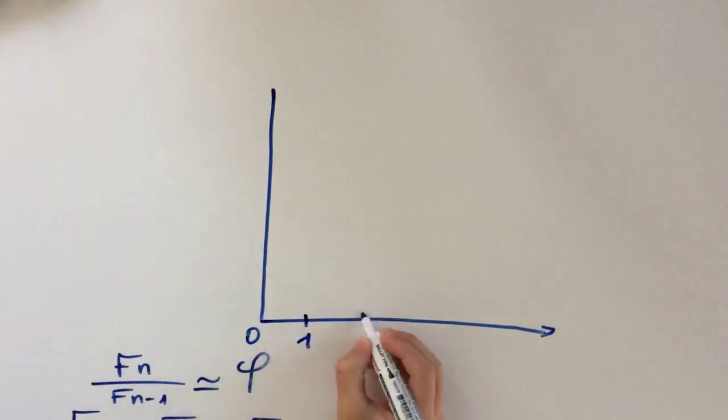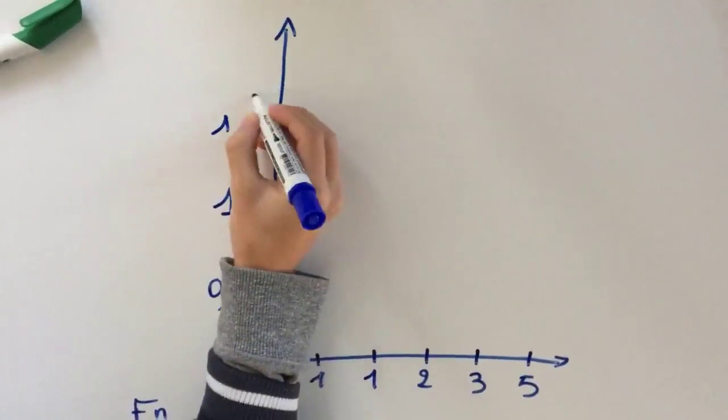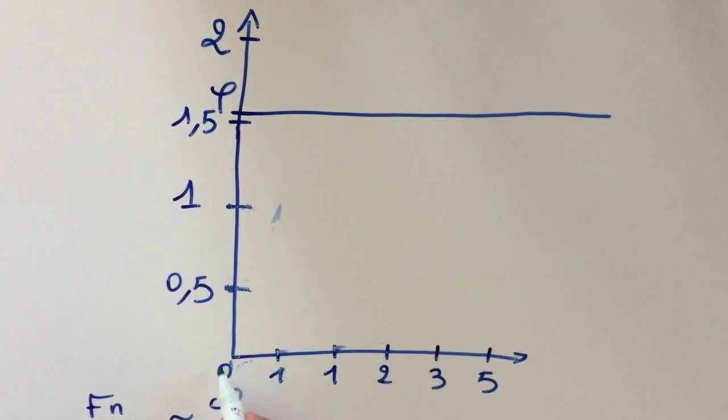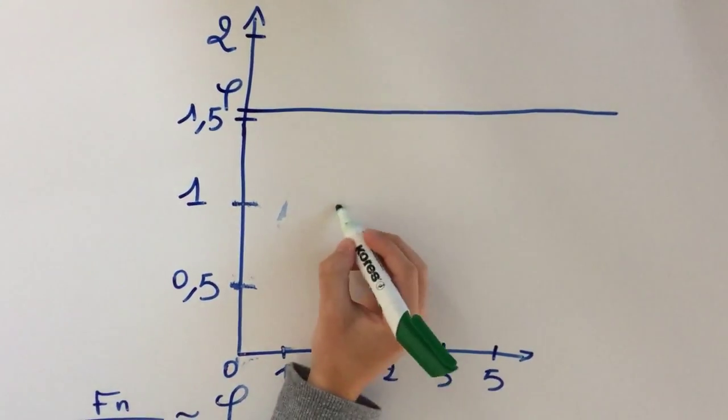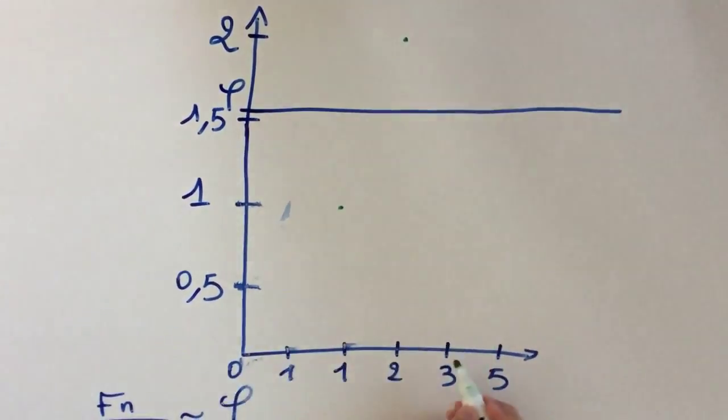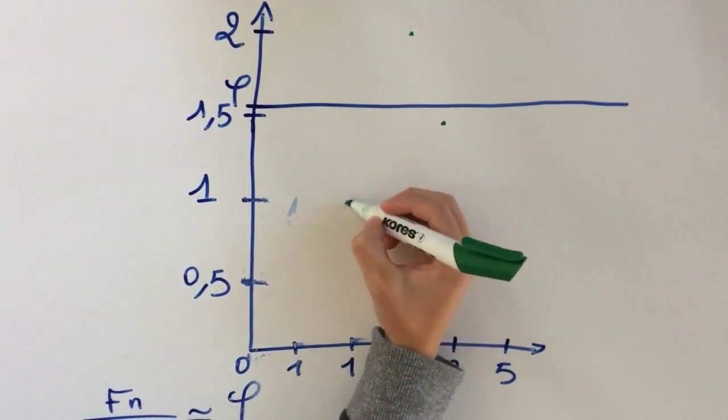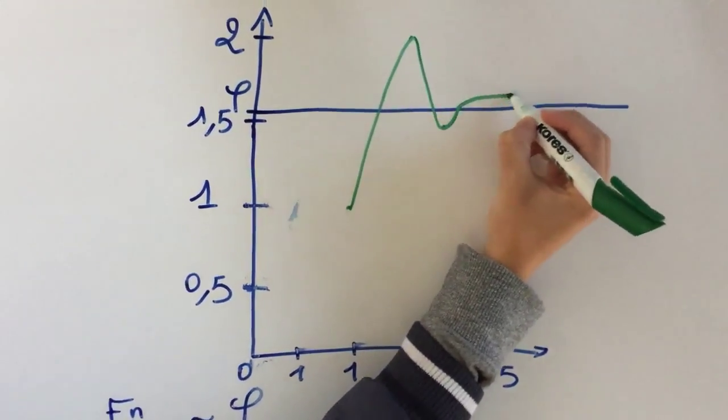And I'm going to be trying to draw a representative graph of Fn over Fn minus 1. So, 1 over 0 is impossible, 1 over 1 is 1, 2 over 1 is 2, 3 over 2 is 1.5, and then it just gets closer and closer to the number phi.